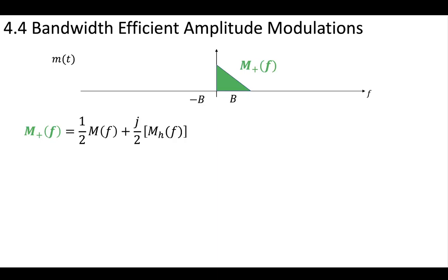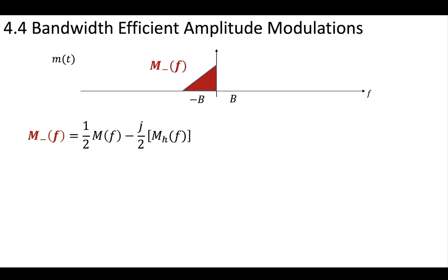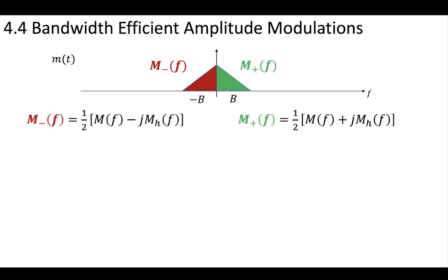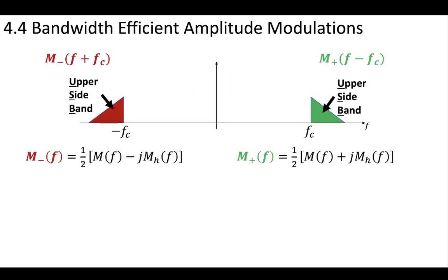We've now seen that the Hilbert transform, which is a pi-half phase shifter, can be used to write just the right side or left side of our original message. So we want to transmit just the upper sideband or the lower sideband. We have gone through the process of finding M plus and M minus definitions that include this Hilbert transform idea. The right side, M plus, can be rewritten in the baseband as a combination of the message plus the Hilbert transformed message. Likewise, M minus on the left side in the baseband can be rewritten as the message and the Hilbert transformed message. So we're going to modulate our message up to plus and minus FC, and transmit just the upper sideband or the lower sideband.